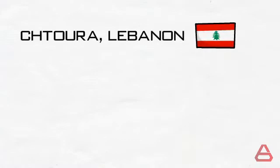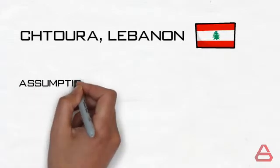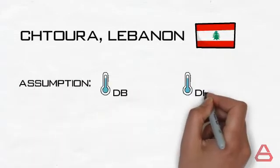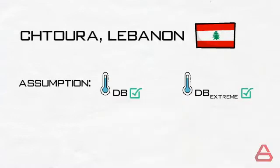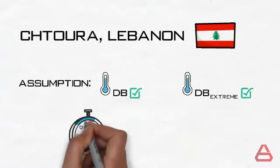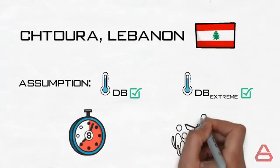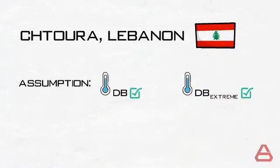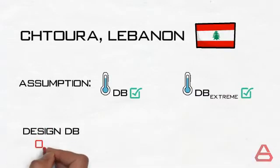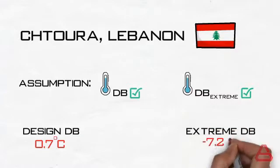Okay so back to Shtoura. We will consider for the time being that the design temperature and the extreme temperatures are given, just for the sake of delivering the idea. But keep in mind that shortly in this video I will show you how to select them using the ASHRAE tool. The design dry bulb temperature is 0.7 degrees Celsius while the extreme annual condition is minus 7.2 degrees Celsius for the lowest temperatures recorded at a frequency of 50 years.